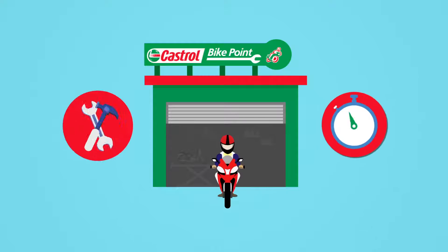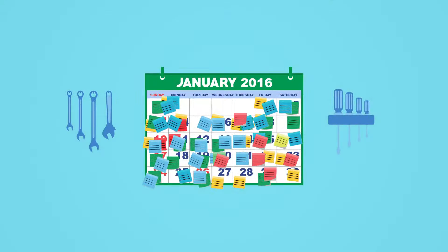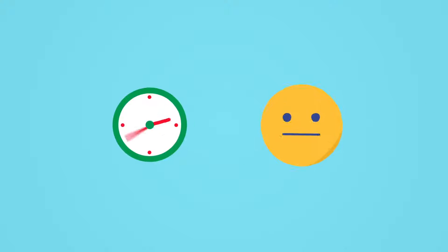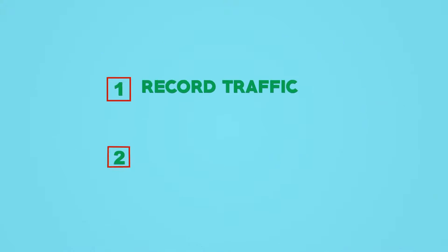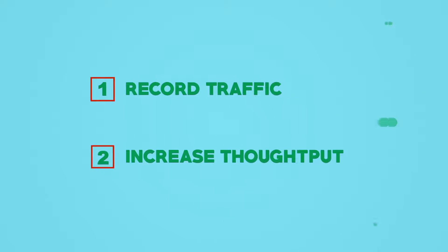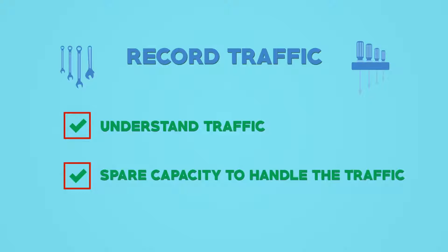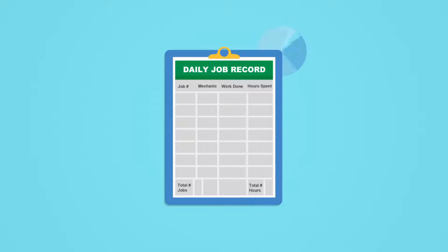Every customer loves quick service, but sometimes workshops take in more traffic than they can handle, and this work overload leads to delays and unsatisfied customers. To manage increased traffic, you should do two things: firstly, you need to understand traffic, and secondly, see if you have the spare capacity to handle the traffic. Use a simple job record sheet to track information of traffic.